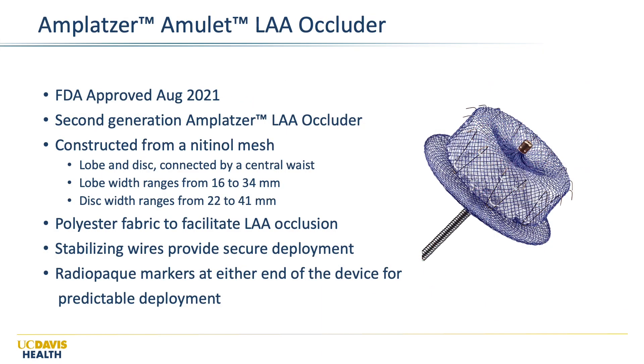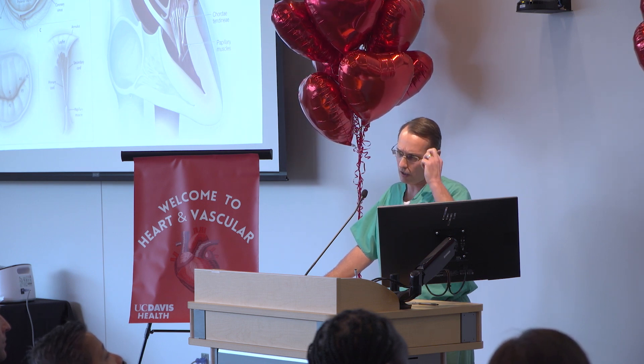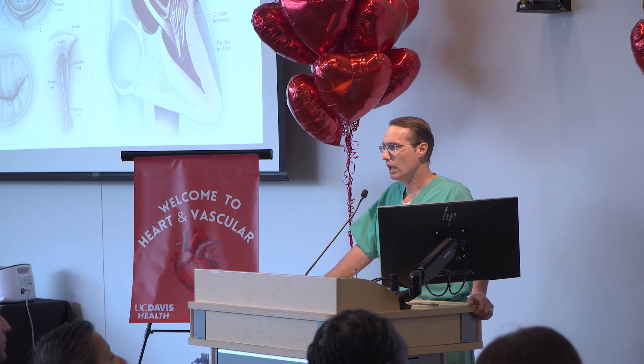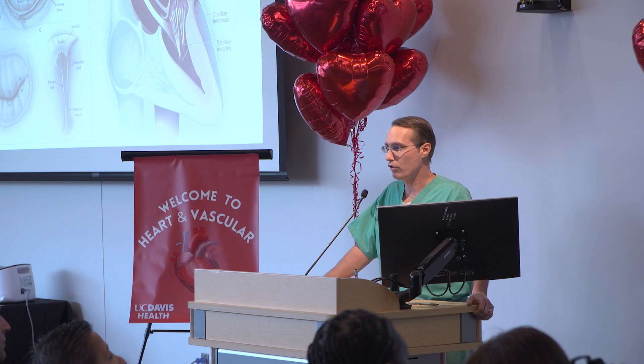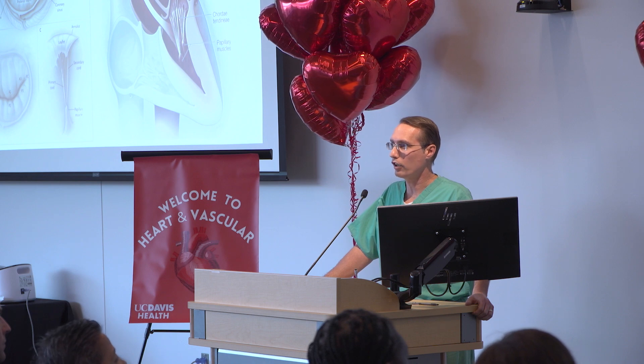There's also an Amplatzer occluder that we can put in the left atrial appendage. Now, the mitral valve is extremely complex and the tricuspid valve is even more complex than that — the aortic valve turns out to be probably the easiest valve we work on. The mitral valve has two leaflets, supporting structures, muscles, and cordae — lots of stuff that helps it function well and not leak. But if it does leak, patients would traditionally go for surgical mitral valve repair, which our surgical colleagues can perform for patients with mitral valve disease.